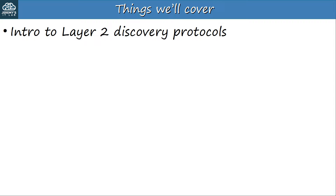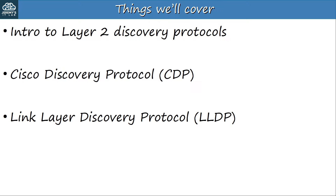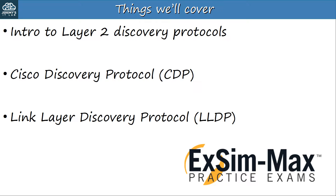Before moving on to the quiz, let's review what we studied in today's video. Layer 2 discovery protocols enable directly connected neighbors to share various information with each other — such as hostname, device type, IP address, software version, etc. They can be very useful and convenient, but remember that they can also be considered a security risk because of the information they share with connected devices, so many network admins choose to disable them. CDP is Cisco's Layer 2 discovery protocol. LLDP was developed after CDP as an industry standard alternative, supported by many vendors — so if your network uses a mix of Cisco, Juniper, Palo Alto, Fortinet, etc., you'll have to use LLDP.